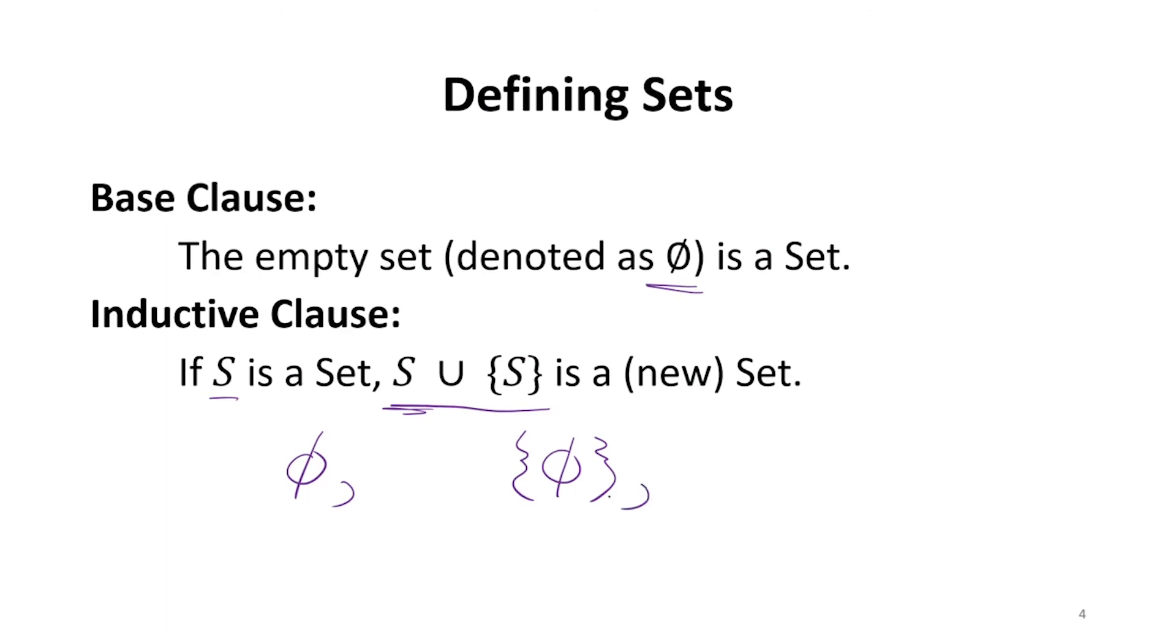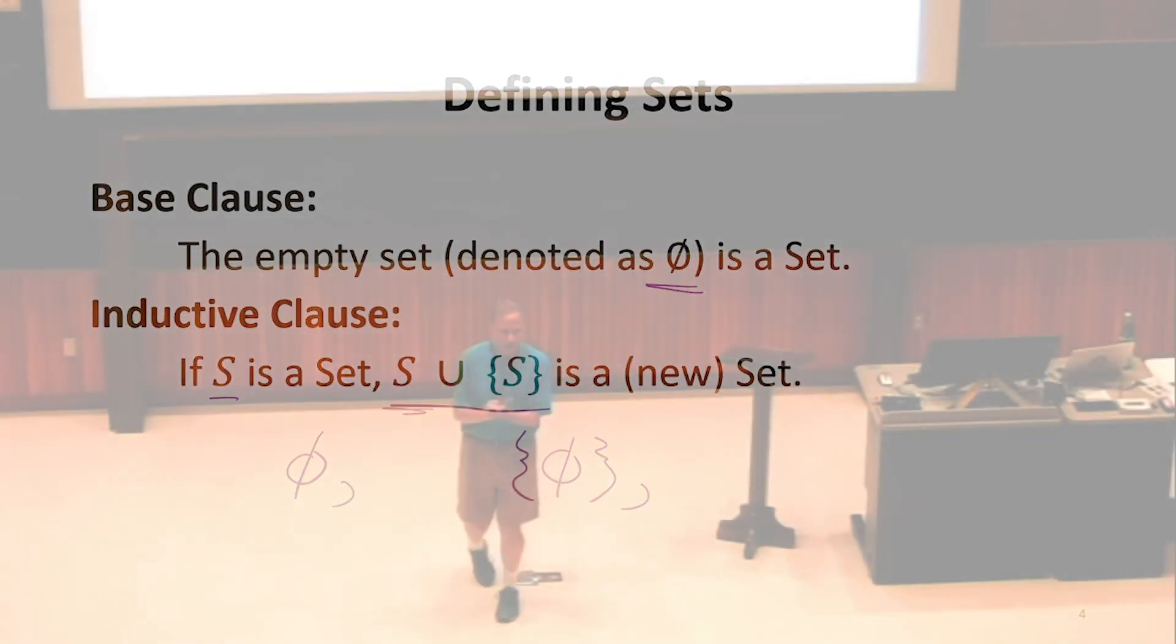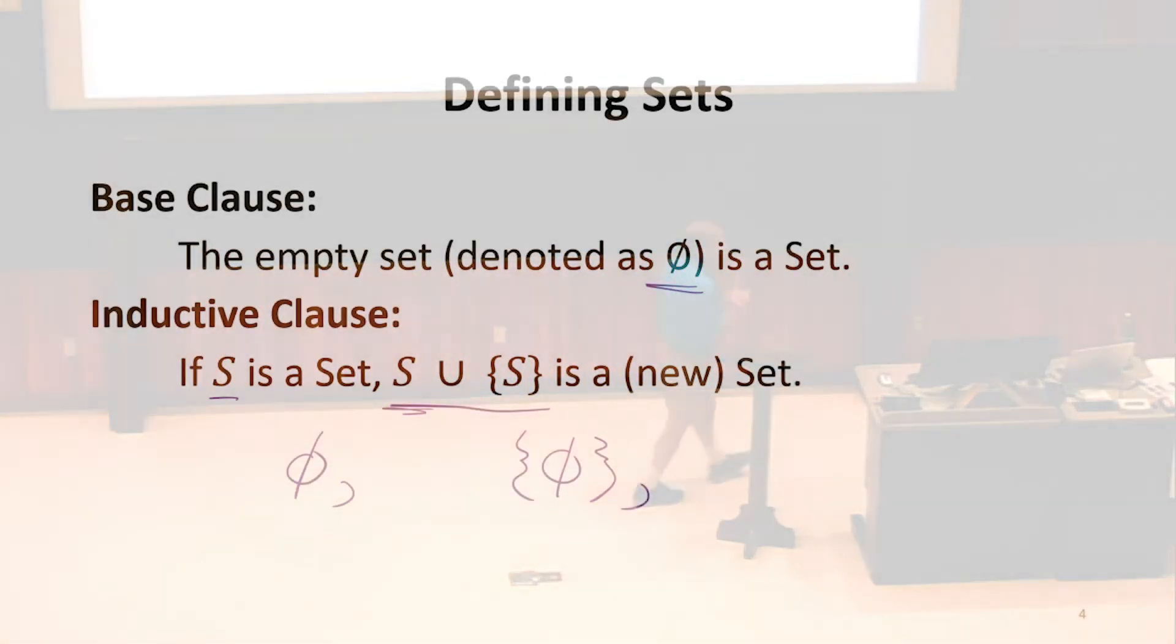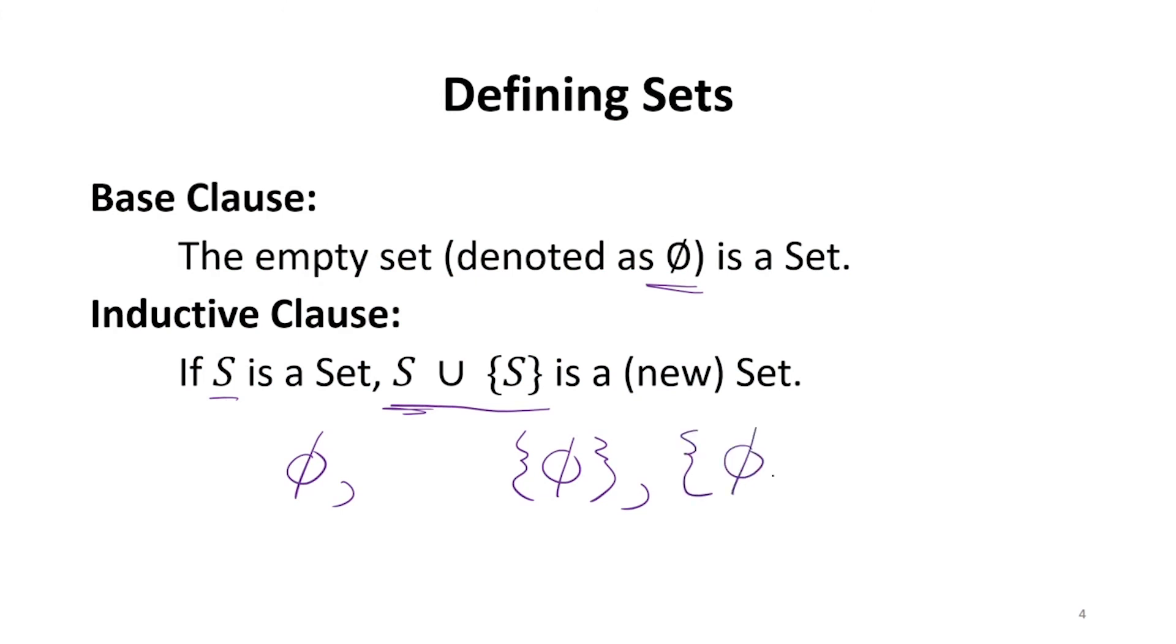What's the next set going to look like? This might be a little hard to say verbally. It's going to be a different set. It's not the same set because it's going to be a set that now has two elements. It has the element, the empty set, and it has the element, the set containing the empty set. We can keep going.